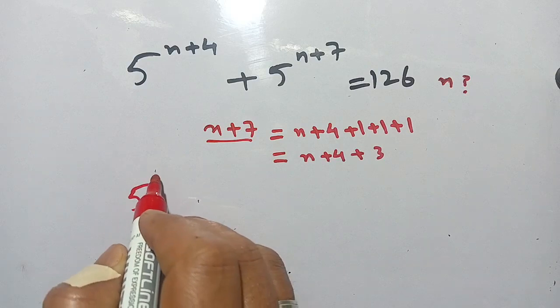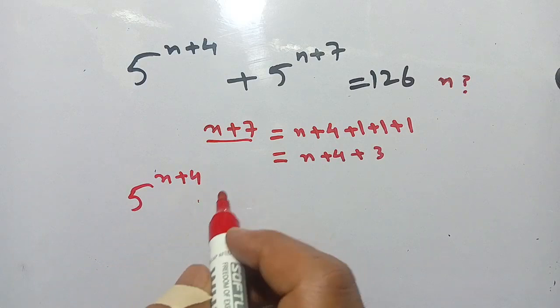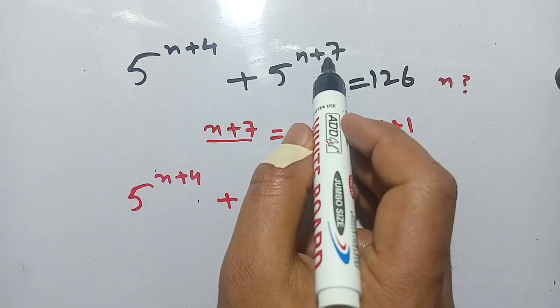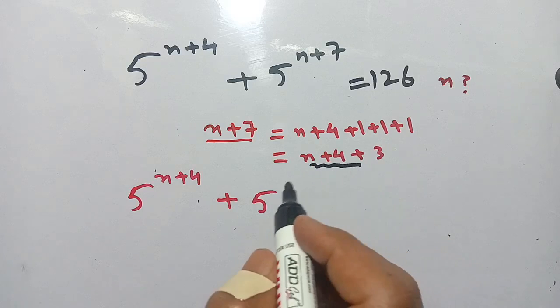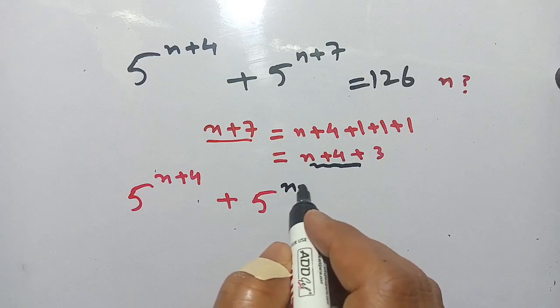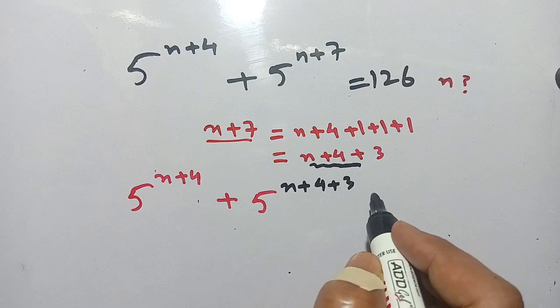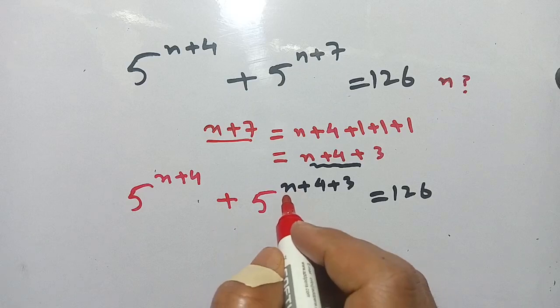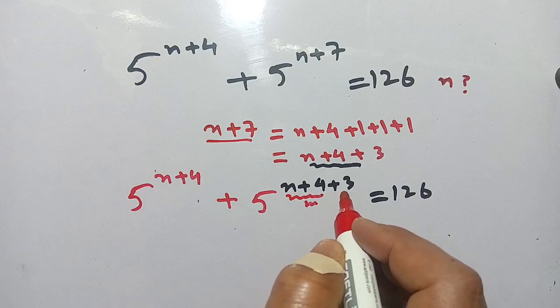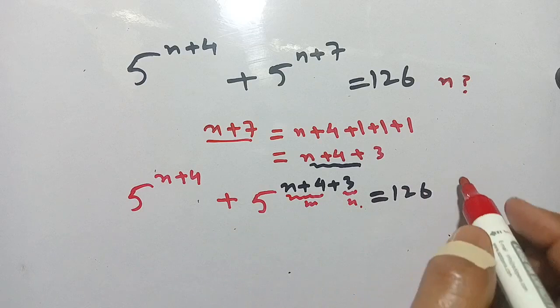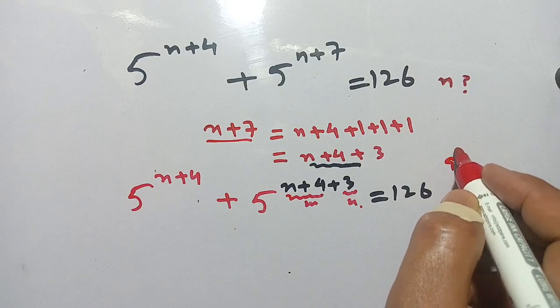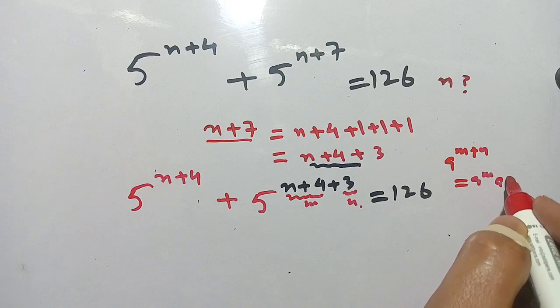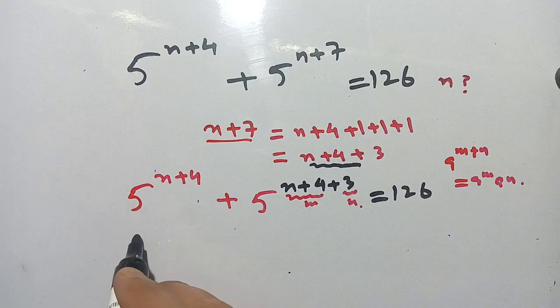5 power n+4 as it is, plus 5 power, in place of n+7 we put n+4 plus 3, is equal to 126. Now suppose that n+4 is m and 3 is n. Now we apply here the rule: a power m+n equals a power m times a power n.